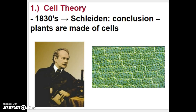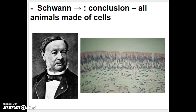Fast forwarding on our cell discovery timeline to the cell theory: in the mid-1800s, Schleiden, a botanist who studied plants, used an improved microscope and concluded that plants are made of cells. Schwann was another gentleman who contributed to the cell theory — an anatomist who worked with animals — and using the microscope, he concluded that all animals are made of cells.